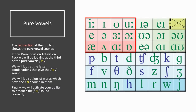The red section at the top left shows the pure vowel sounds. In this Pronunciation Activation Pack, we will be looking at the third of the pure vowels. We will look at the letter combinations that give the sound, and lots of words which have the sound in them. Finally, we will activate your ability to produce the sound correctly.